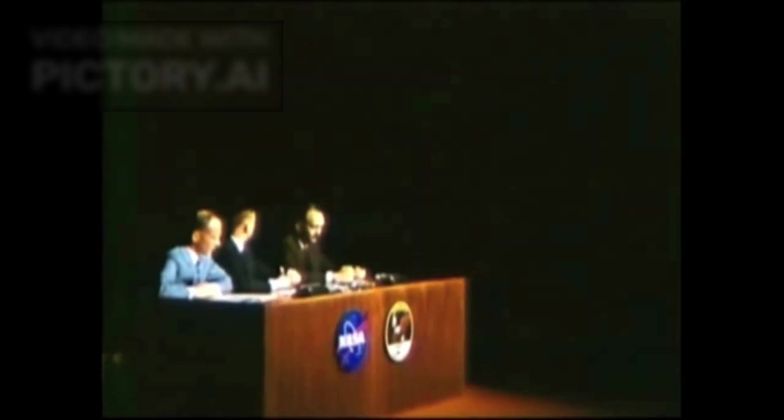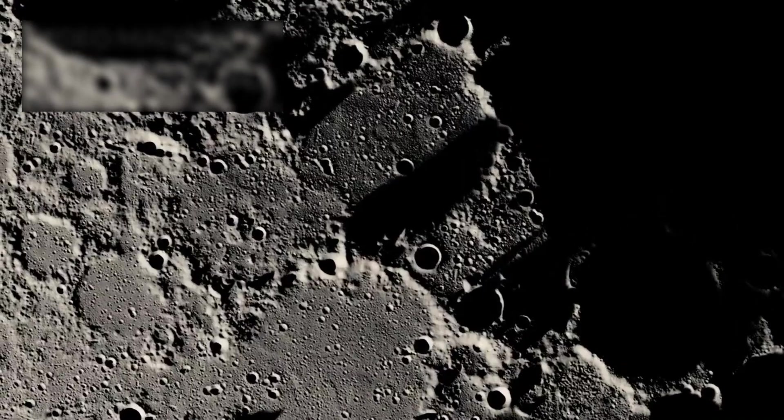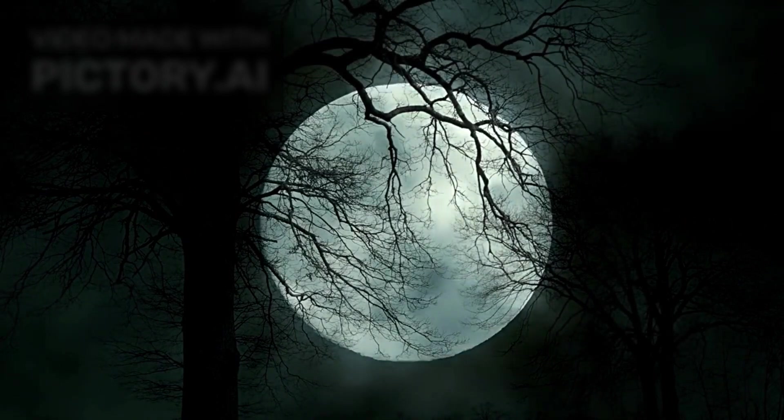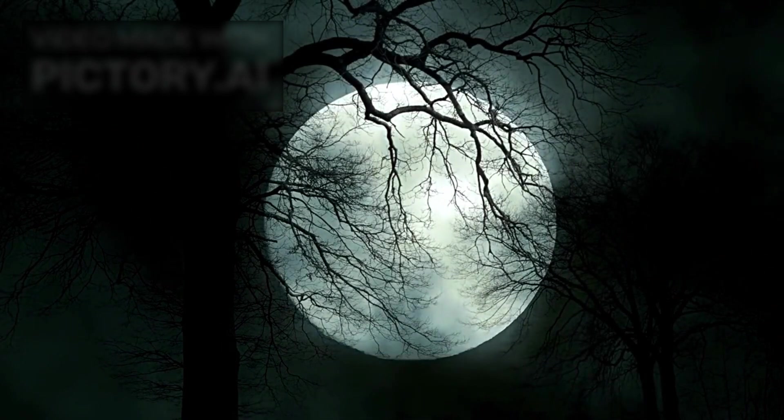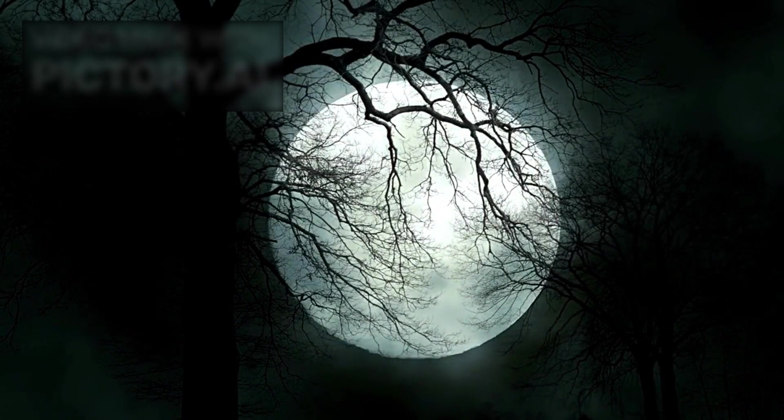This wasn't just a boulder or a metal deposit. The structure was geometric, perfectly symmetrical, a hexagonal formation buried beneath the dust and regolith. It seemed to be made of a dark metallic alloy unlike any material known to exist naturally on the moon, or even on Earth.